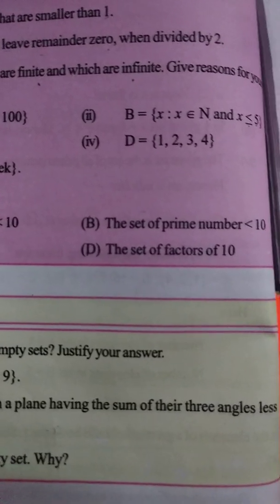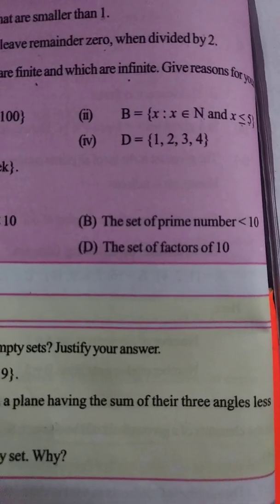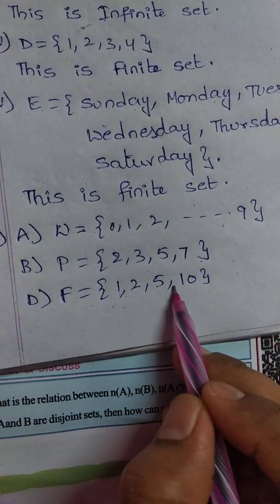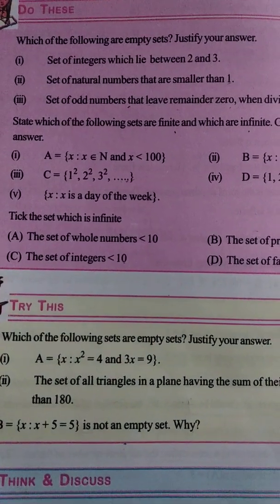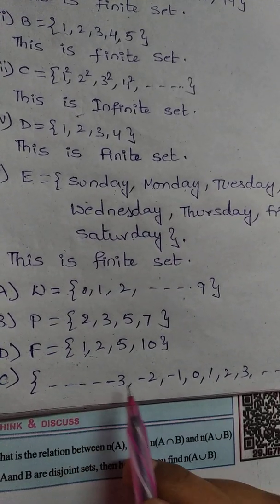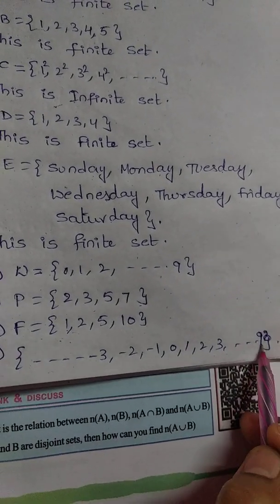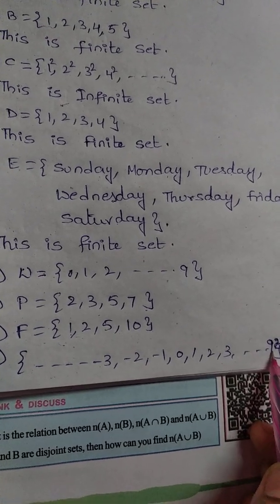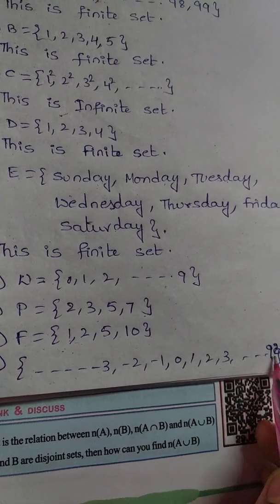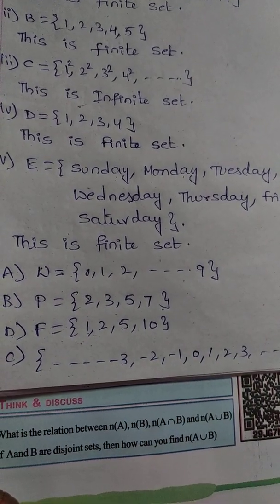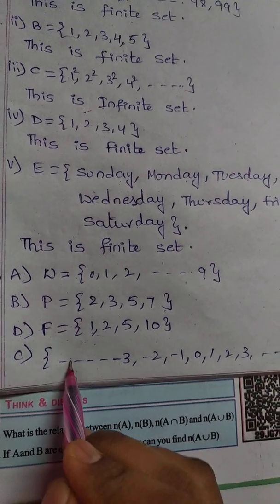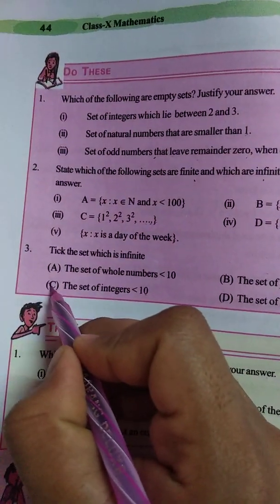The set of factors of 10: the factors are 1, 2, 5, 10 — we can count them, so it is a finite set. The set of integers less than 10: the positive integers go up to 9, but the negative integers continue to negative infinity. So this set is an infinite set. Tick this option — the set of integers less than 10 is the infinite set.